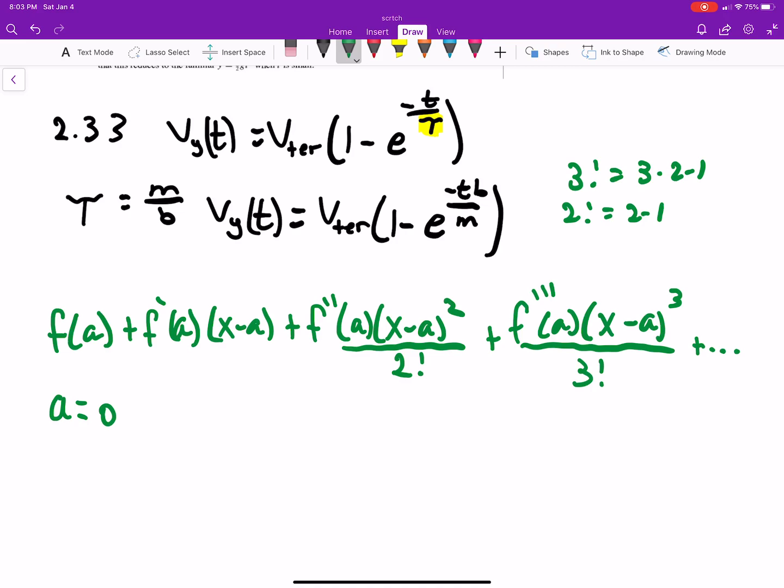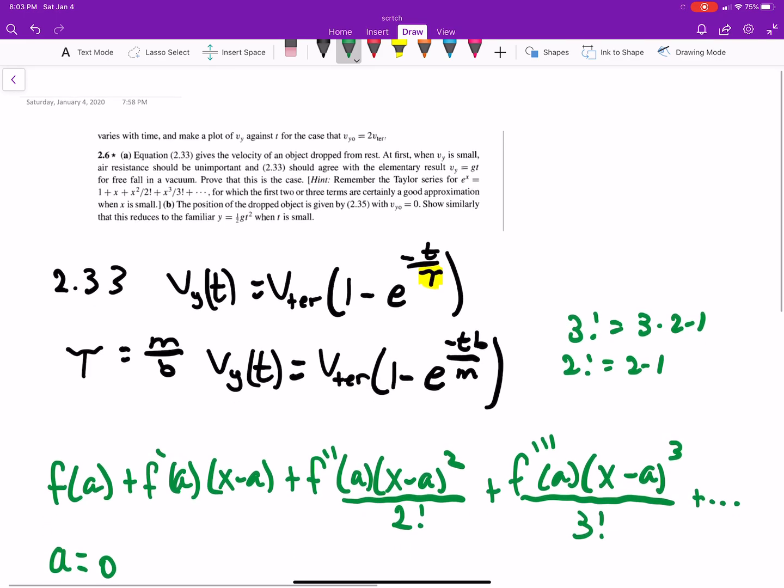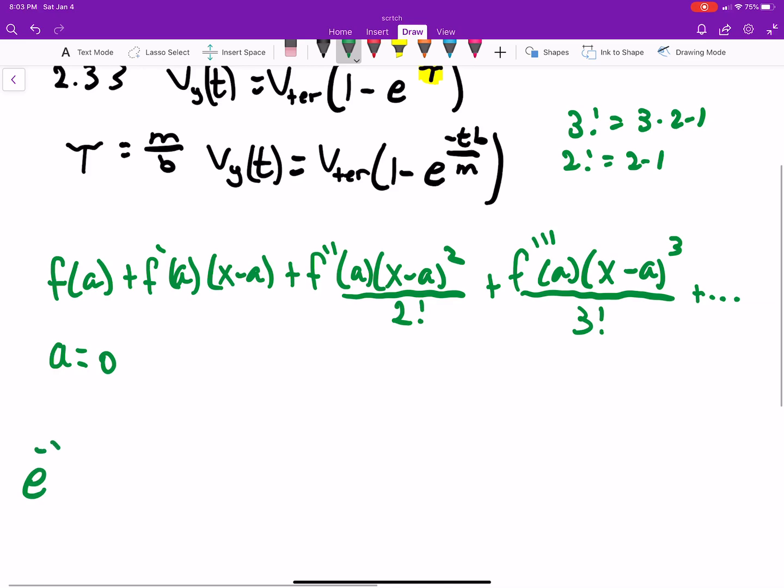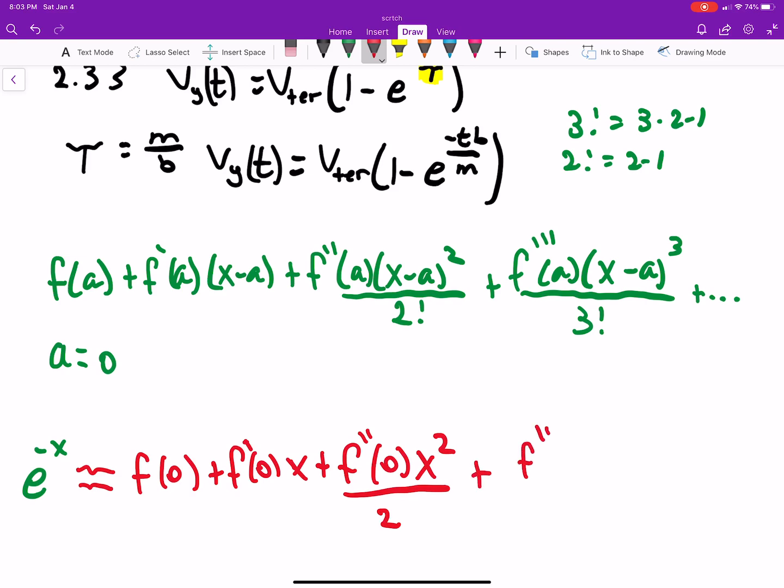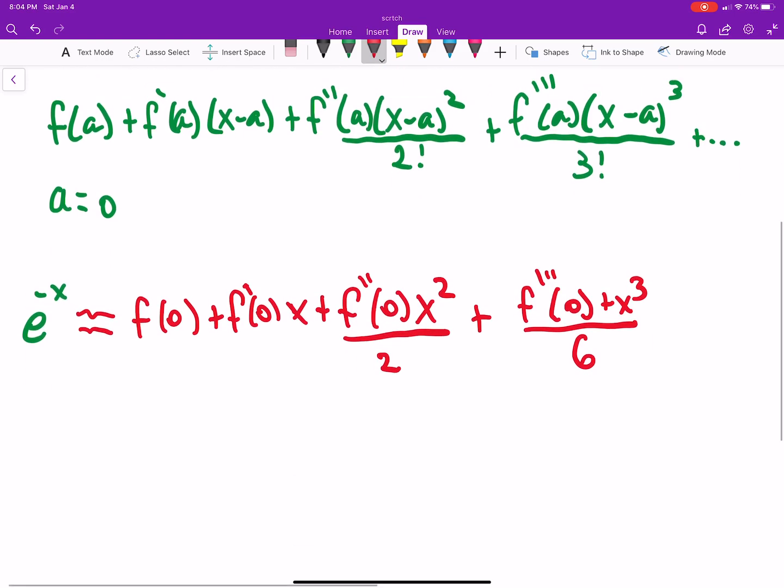So if we want to find the Taylor series for e to negative some variable, in other words think of it like e to the minus x, we can approximate that as f at zero plus f prime at zero times x plus f double prime at zero times x squared over two factorial. That's just two. Our function e to the minus zero, let's see if we can go ahead and work through this.